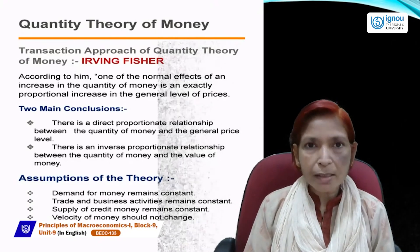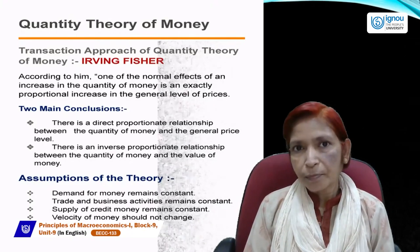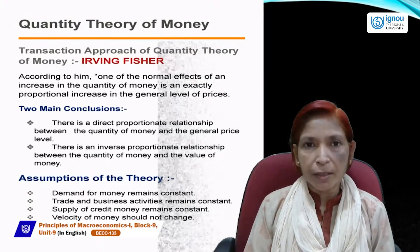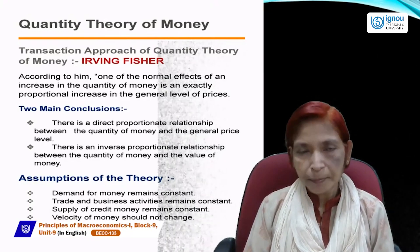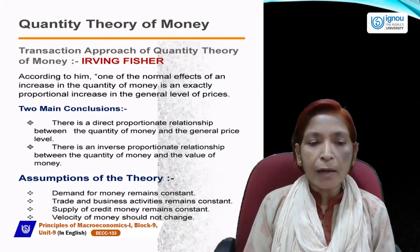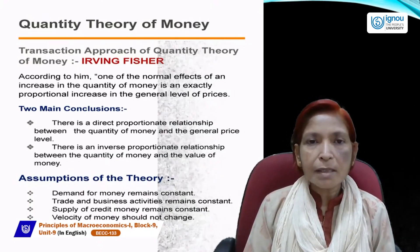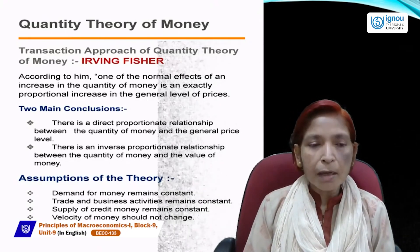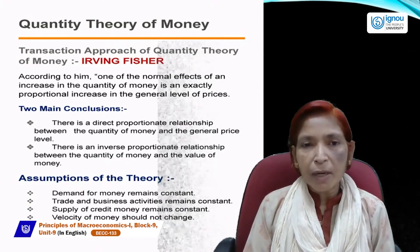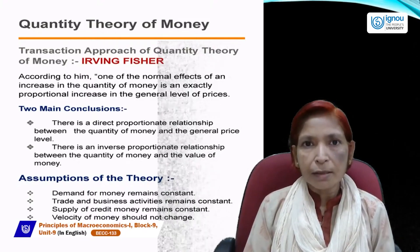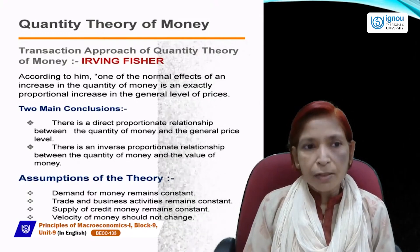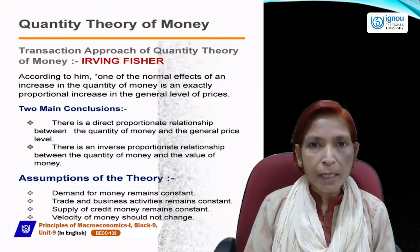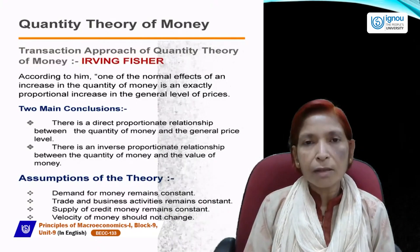To summarize the three relationships: first, money supply and price level have a direct, positive, and proportionate relationship. Second, price level and value of money have an inverse relationship — if price level rises, value of money falls and vice versa. Third, money supply and value of money are inversely related — when money supply rises, value of money falls, and when money supply falls, value of money rises.